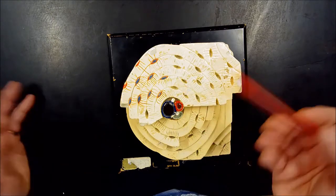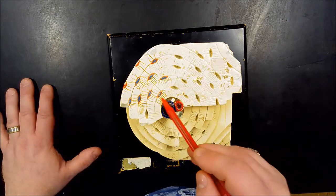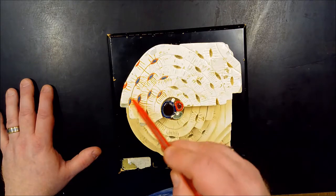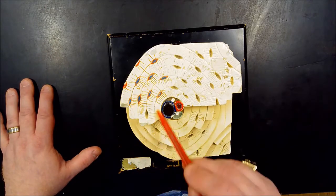So Haversian canal, central canal, osteonic canal, here's the lacuna, these are empty, they should have an osteocyte in there but for the model purposes they're empty so you can appreciate that it's a pocket. But these over here that are painted in blue, those are the osteocytes that are in the lacunae.